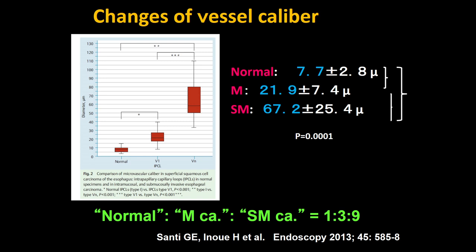This is very important work: measuring the diameter of the vessels. We compare three regions — non-neoplastic, mucosal cancer, and submucosal cancer. The diameter of the vessel is totally different. In a normal IPCL, the size of the vessel is approximately 7 microns — almost equal to the size of a red blood cell. In intramucosal cancer, it is three times larger, meaning three red blood cells can pass through in parallel. In submucosal cancer, large new tumor vessels are exposed to the surface and we can recognize very large abnormal vessels.